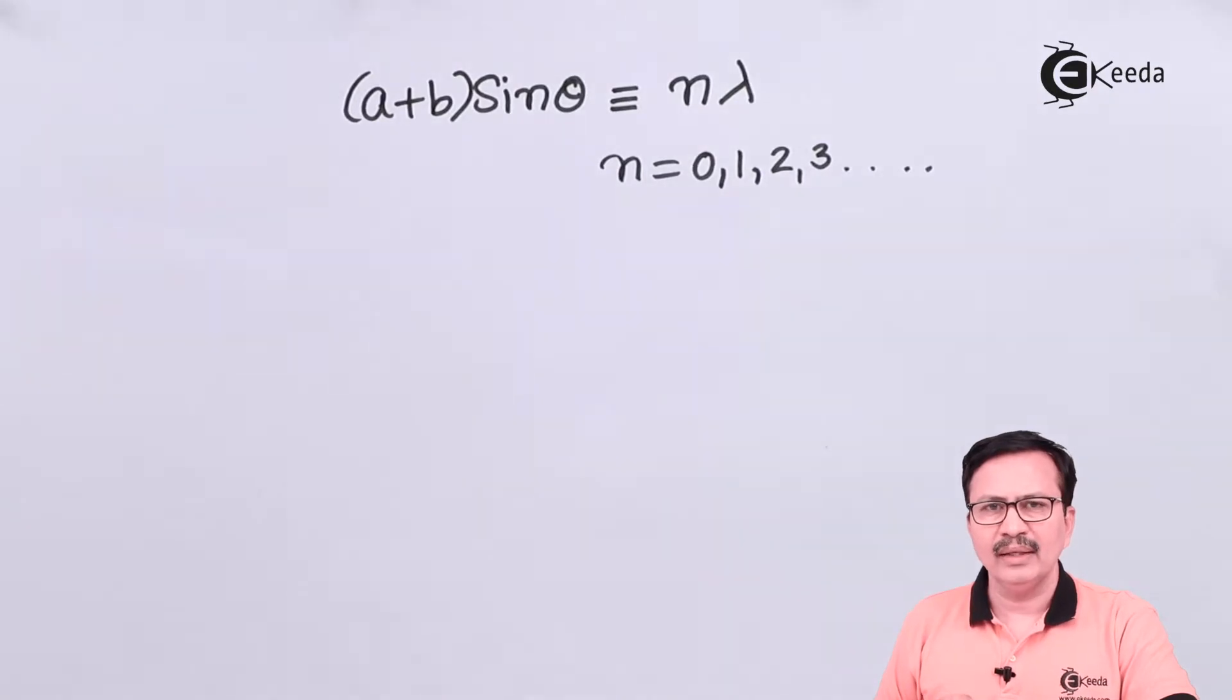Lambda is the wavelength that is incident on the diffraction grating. Theta is the angle of diffraction, and a plus b one can say is nothing but d, which is the distance between one opaque and one transparent ruling in the grating.